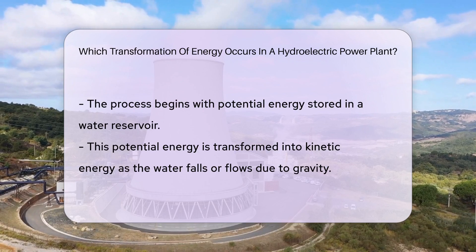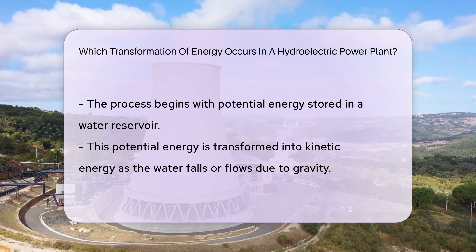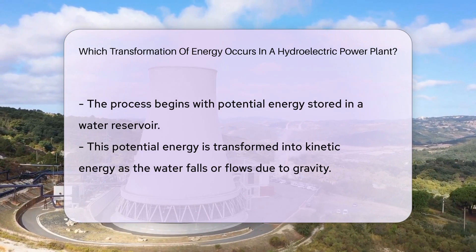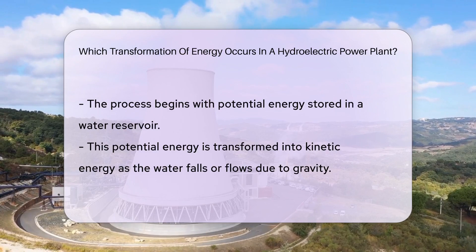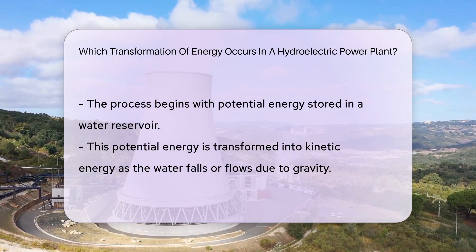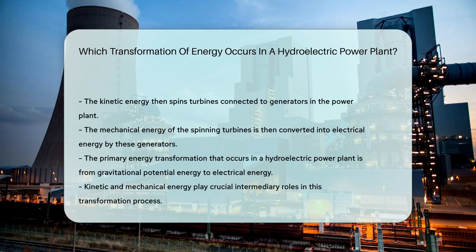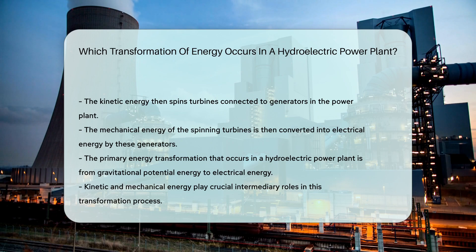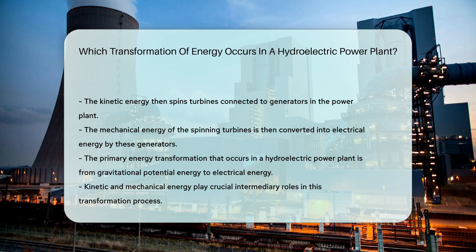This kinetic energy then spins turbines connected to generators in the power plant. The mechanical energy of the spinning turbines is then converted into electrical energy by these generators. So in a nutshell, the primary energy transformation that occurs in a hydroelectric power plant is from gravitational potential energy to electrical energy, with kinetic and mechanical energy playing crucial intermediary roles.